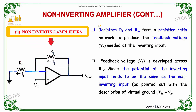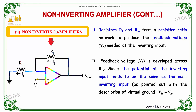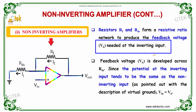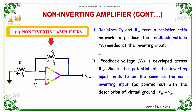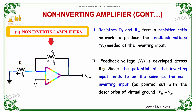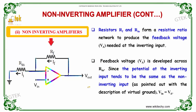Here you can see the resistors RF and RN form a resistive ratio network in order to produce the feedback voltage, which is VA. The feedback voltage VA is developed across RN. Since the potential of the inverting input tends to be the same as the non-inverting input — as described by the concept of virtual ground — we can simply say that VIN is equal to VA.